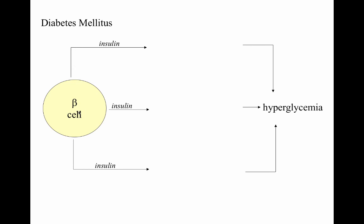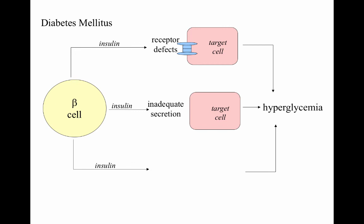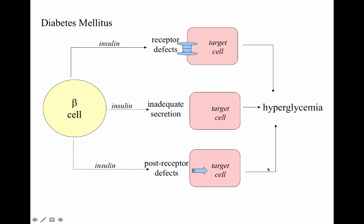From beta cells where insulin is produced, several pathways lead to diabetes mellitus: inadequate secretion of insulin contributes to hyperglycemia; receptor defects don't allow insulin to open the gateway for glucose to enter the cell; and post-receptor defects mean insulin can allow glucose into the cell but conversion problems remain. All of these lead to hyperglycemia — higher amounts of glucose in the bloodstream.